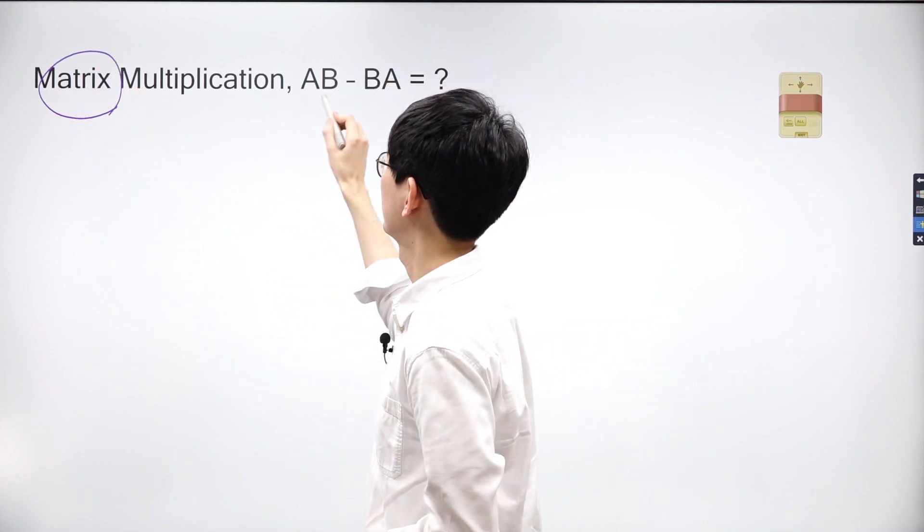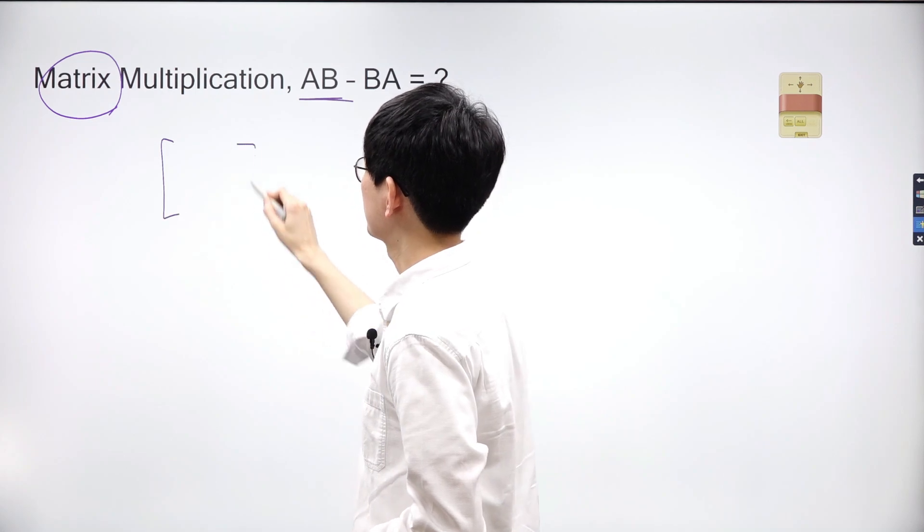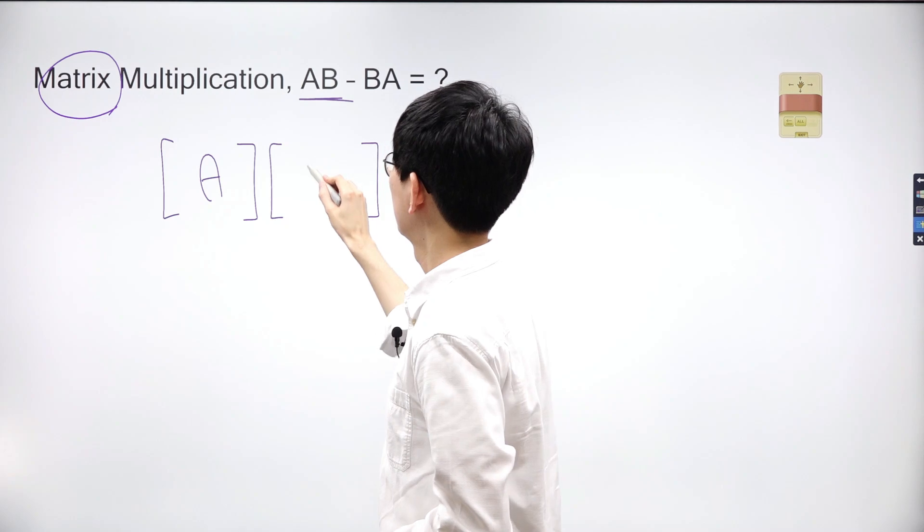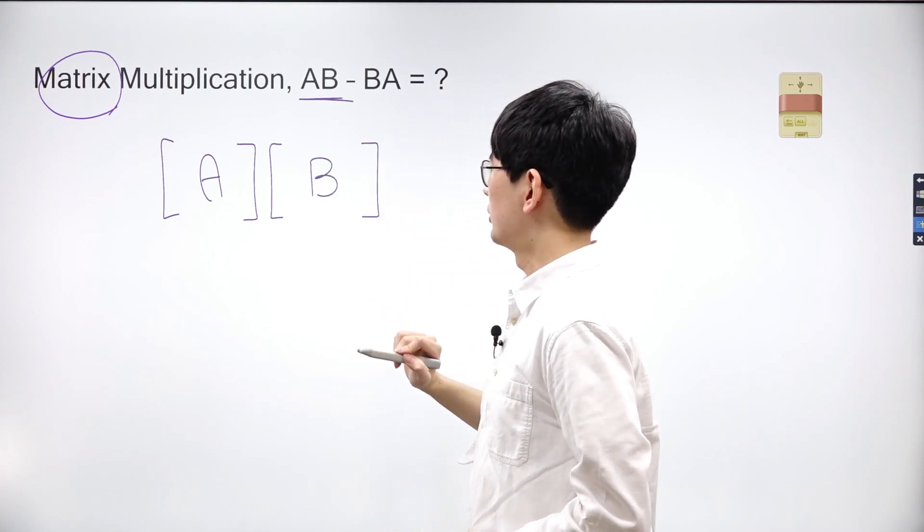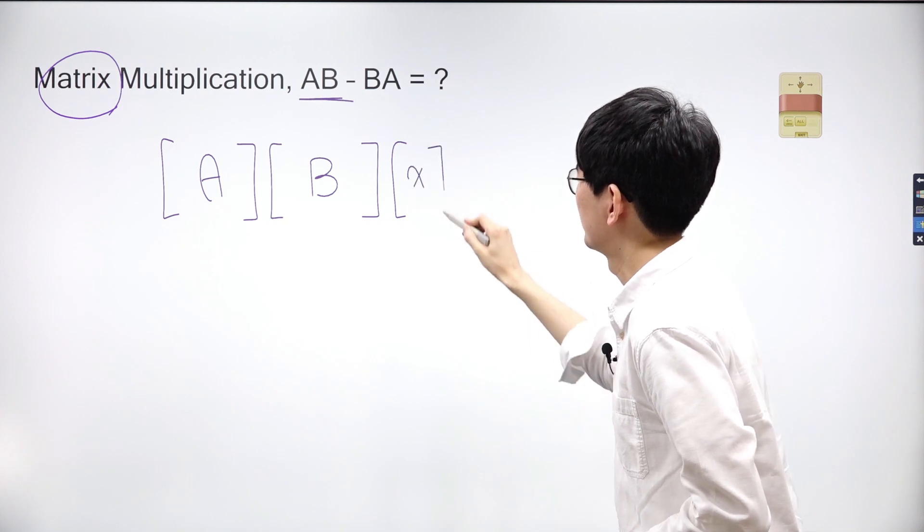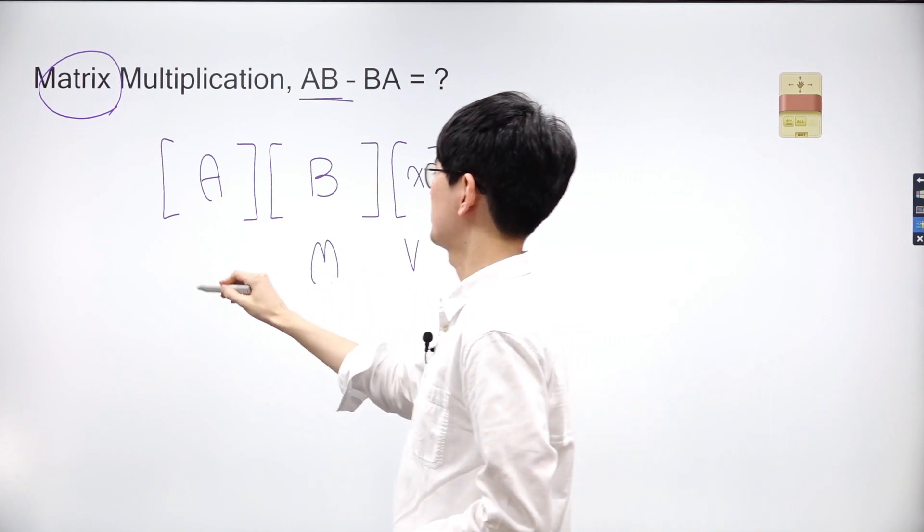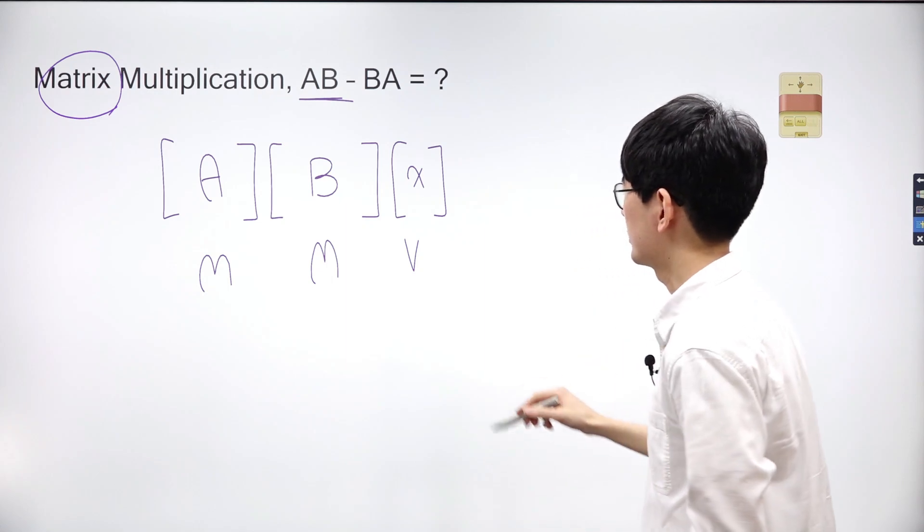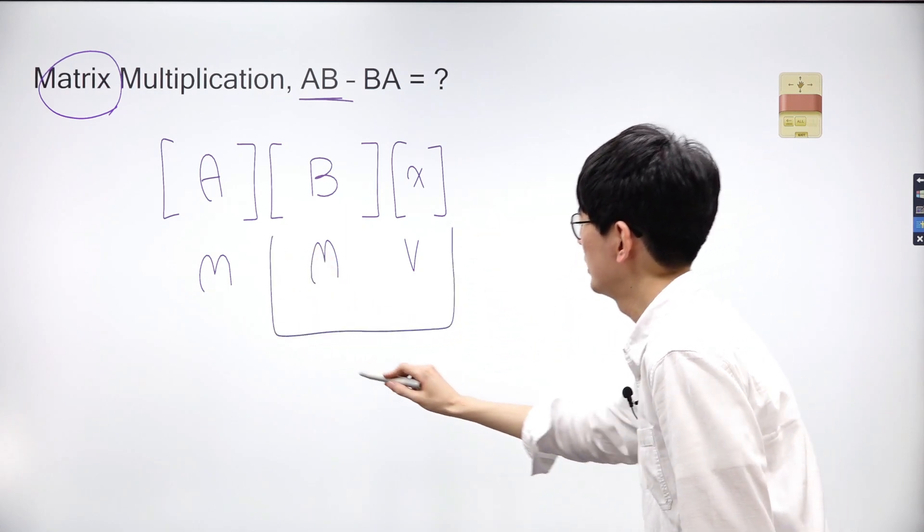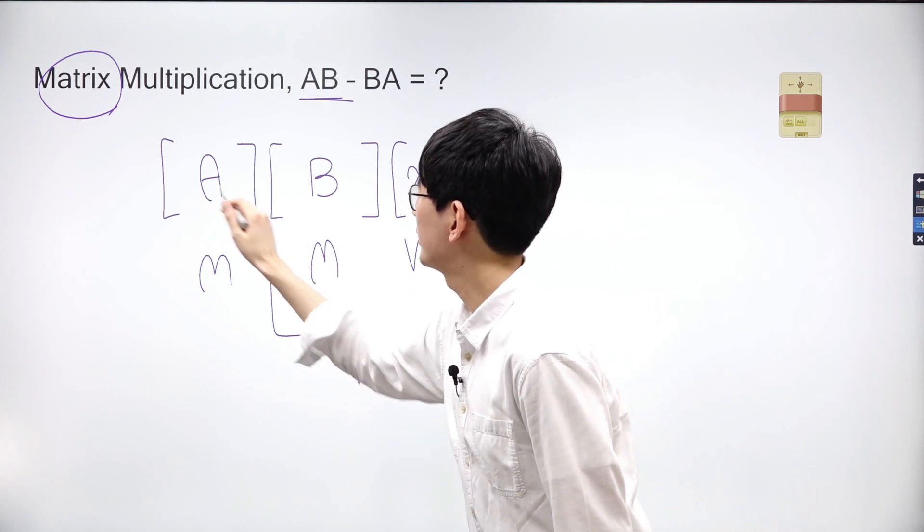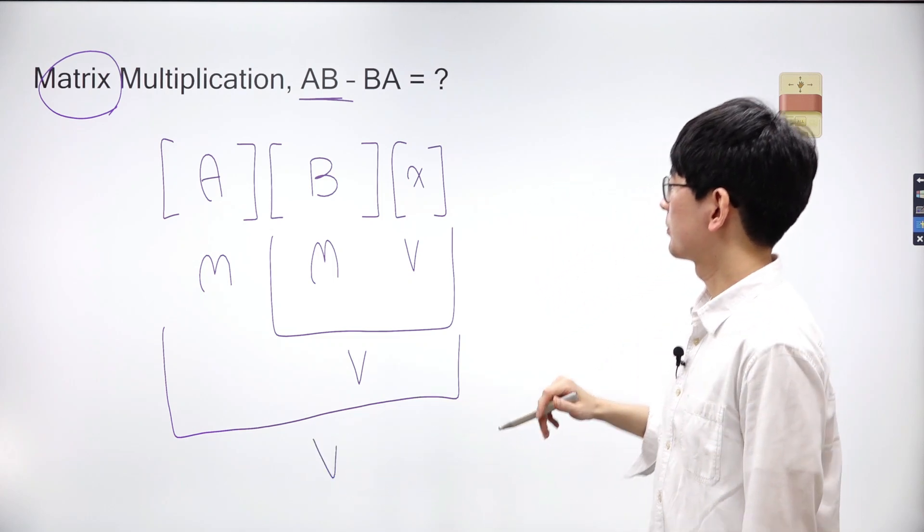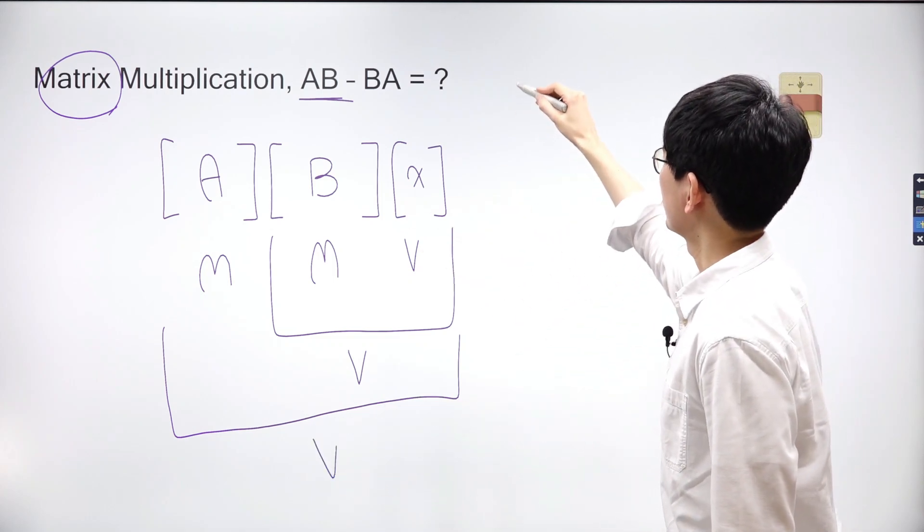Let's see what happens when we multiply two matrices. Let's consider multiplying two matrices A and B along with a vector x. Once again, A and B are matrices and x is a vector. We'll begin by multiplying matrix B by vector x, resulting in a new vector. Then we'll multiply matrix A by the product of matrix B and vector x, ultimately yielding another vector.